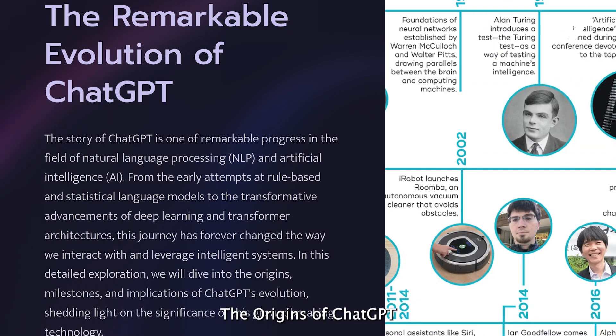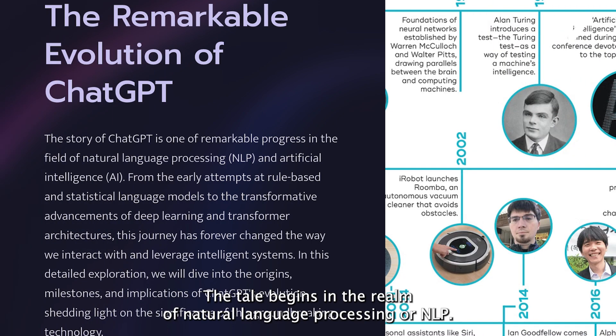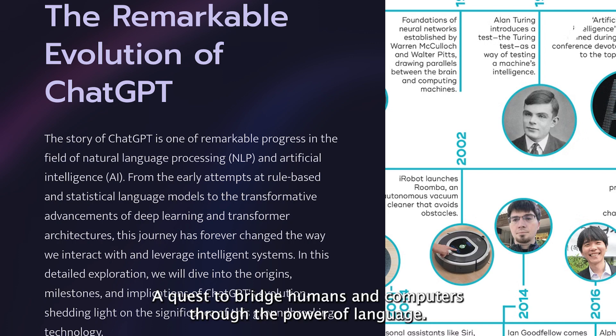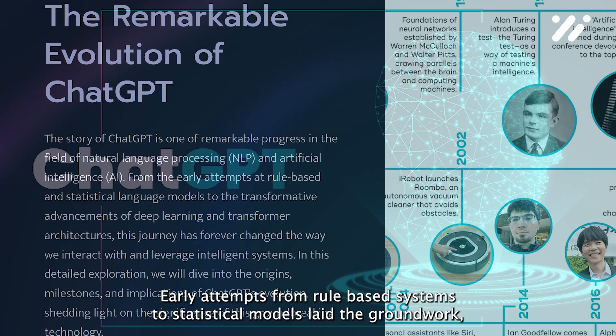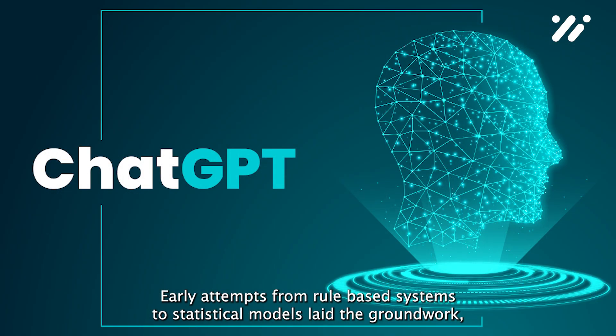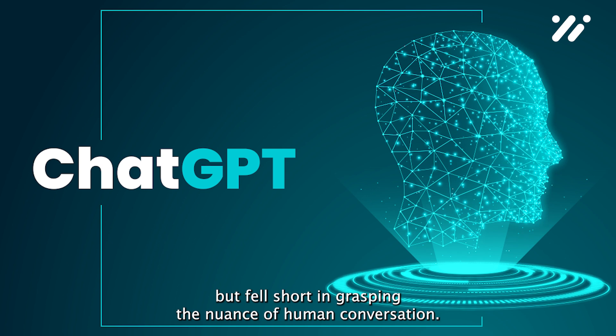Let us take a look into the evolution of ChatGPT — the origins of ChatGPT. The tale begins in the realm of Natural Language Processing, or NLP, a quest to bridge humans and computers through the power of language. Early attempts, from rule-based systems to statistical models, laid the groundwork but fell short in grasping the nuance of human conversation.